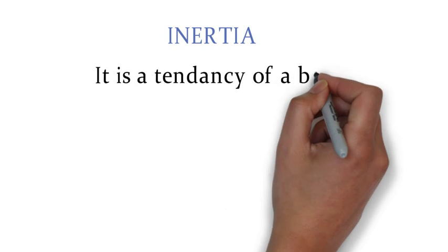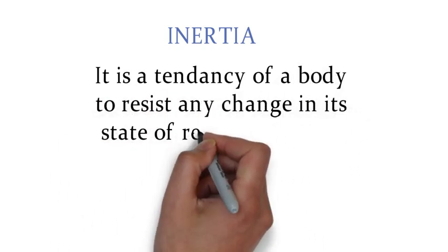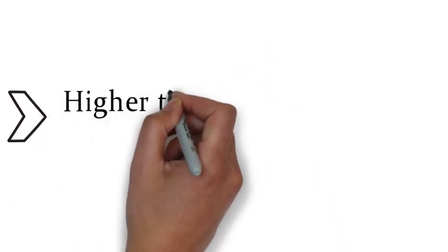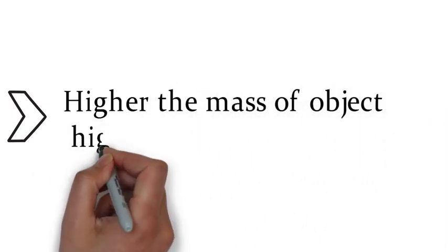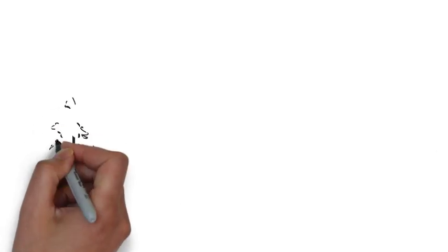For this we have to understand what inertia is. Inertia is basically a tendency of an object to resist any change in its state of rest or motion. Higher the mass of the object, higher the inertia of the object. That means you need a larger effort to move that object.